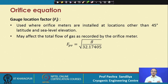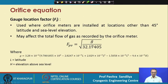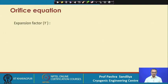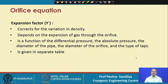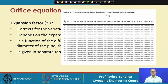Depending on the latitude and elevation at which the gauges are located, there is also an effect on metering. A correction for gravitational acceleration is given by an equation where L is the latitude and H is the elevation above sea level. The expansion factor corrects for density variation and depends on how the gas expands through the orifice — it is a function of differential pressure, absolute pressure, orifice diameter, pipe diameter, and type of taps, obtained from tables in the literature.